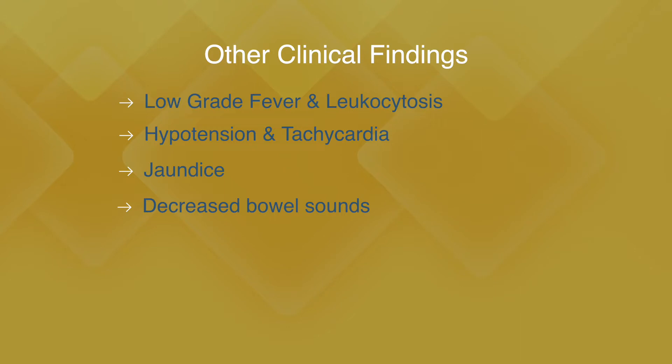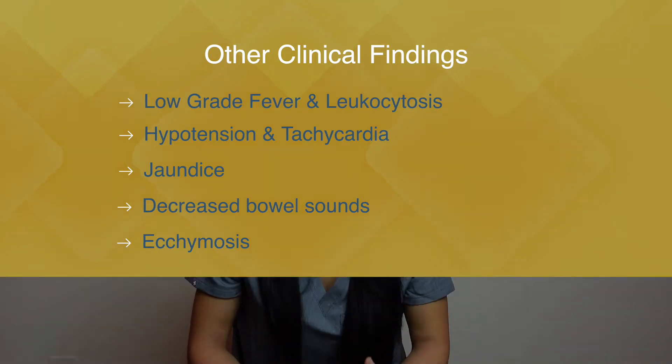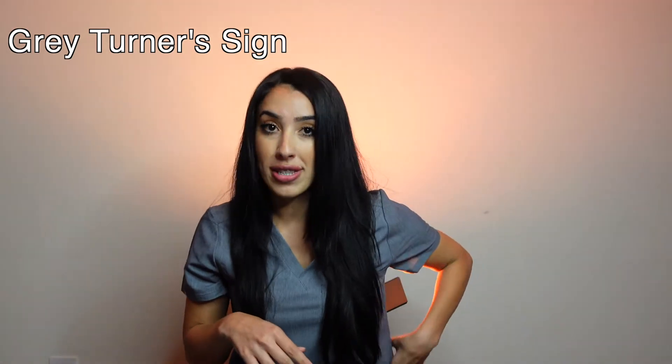Most importantly, we want to look for something called ecchymosis, which is bruising. When the pancreas is inflamed it can cause seepage of exudate, causing patients to start bleeding around the pancreatic tissue. This shows in two different signs. We have Gray Turner's sign — bruising on the flanks of the patient on the sides. A way to remember this is you have to turn your patients; when you turn them you would see that bluish-purplish discoloration. We also have Cullen's sign, which appears in the periumbilical area of the patient.